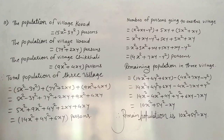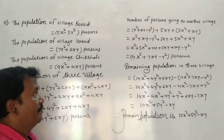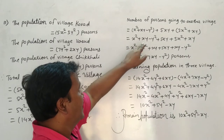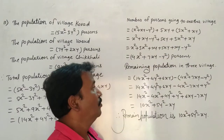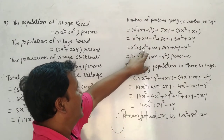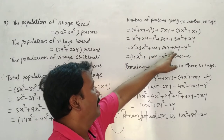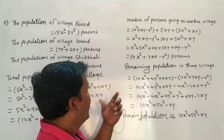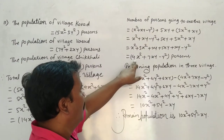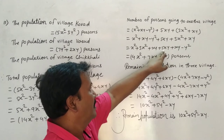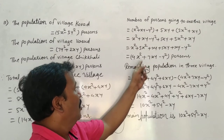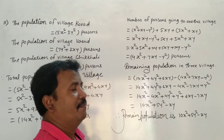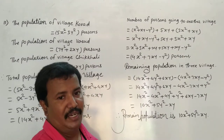Number of persons going to another village: x² + xy - y², 5xy, and 3x² + xy from each village respectively. Combining: x² + 3x² = 4x², xy + 5xy + xy = 7xy, minus y². So 4x² + 7xy - y² persons went to another village for education.